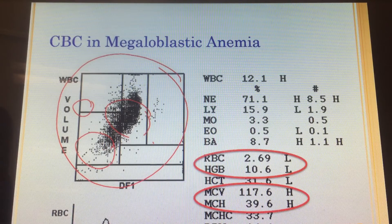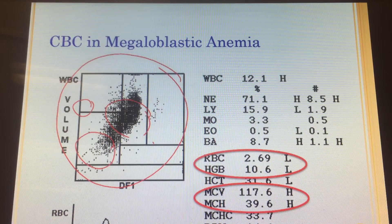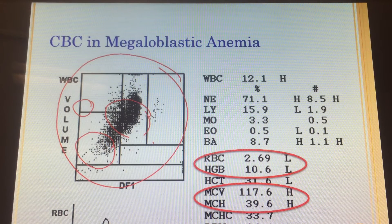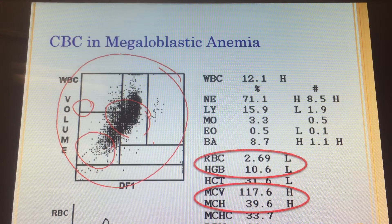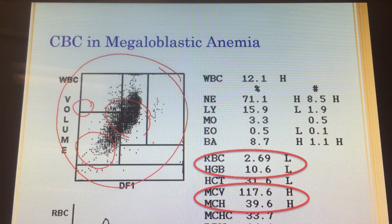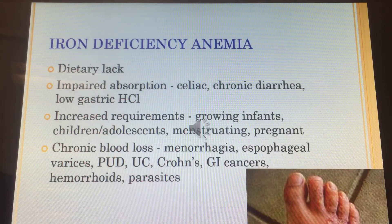This can get really confusing if you don't draw things out. You're thinking: you just told me my mean cell hemoglobin is high — yes, it is, if you're looking at the average hemoglobin content inside each red blood cell. But you do have fewer red blood cells in general because it's still an anemia. That's why I like drawing things out, because you can just get totally turned around. Anyway, let's move on to iron deficiency anemia.